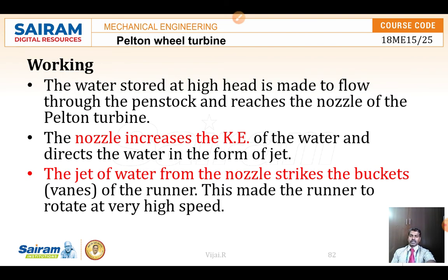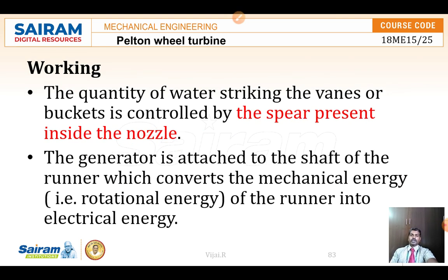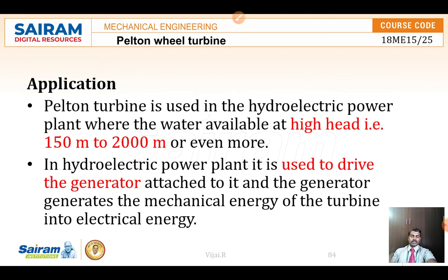The working principle: water stored at a high head in dams passes through the penstock and through the nozzle, hitting on the blades. The nozzle increases the kinetic energy of water, making the runner rotate faster. When the buckets rotate, the shaft rotates. The main function of the turbine is to convert the kinetic energy of water into mechanical energy — that is, rotation.